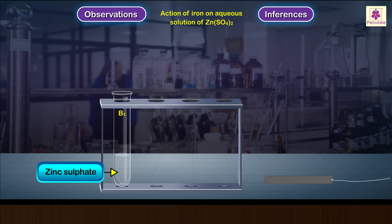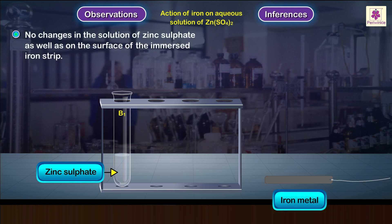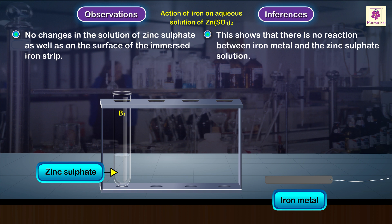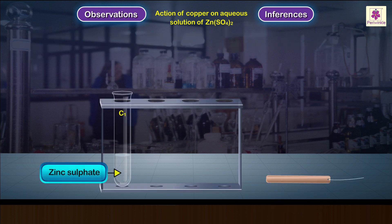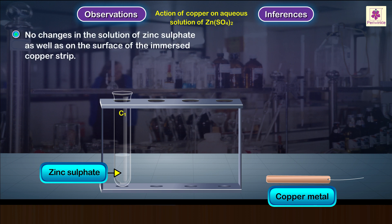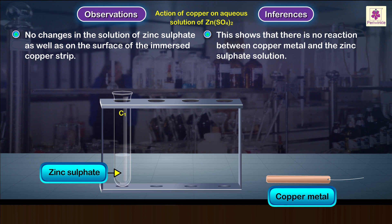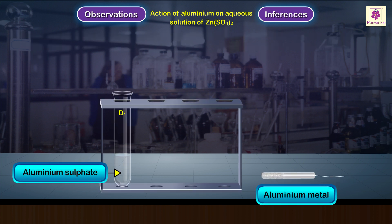Test tube B1 containing iron metal: no changes in the solution of zinc sulfate, and no changes on the surface of the immersed iron strip. This shows that there is no reaction between iron metal and the zinc sulfate solution. Test tube C1 containing copper metal: no changes in the solution of zinc sulfate, and no changes on the surface of the immersed copper strip. This shows that there is no reaction between copper metal and the zinc sulfate solution.